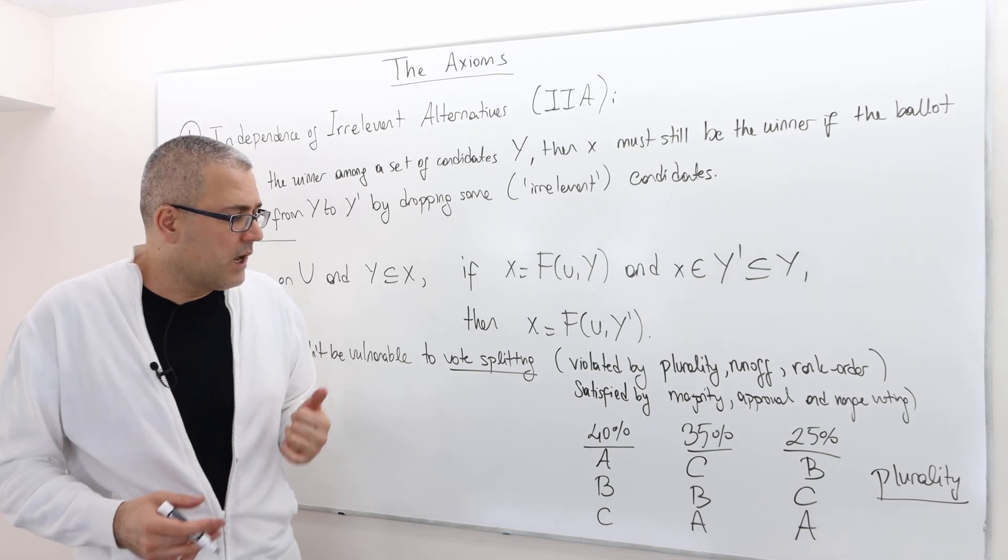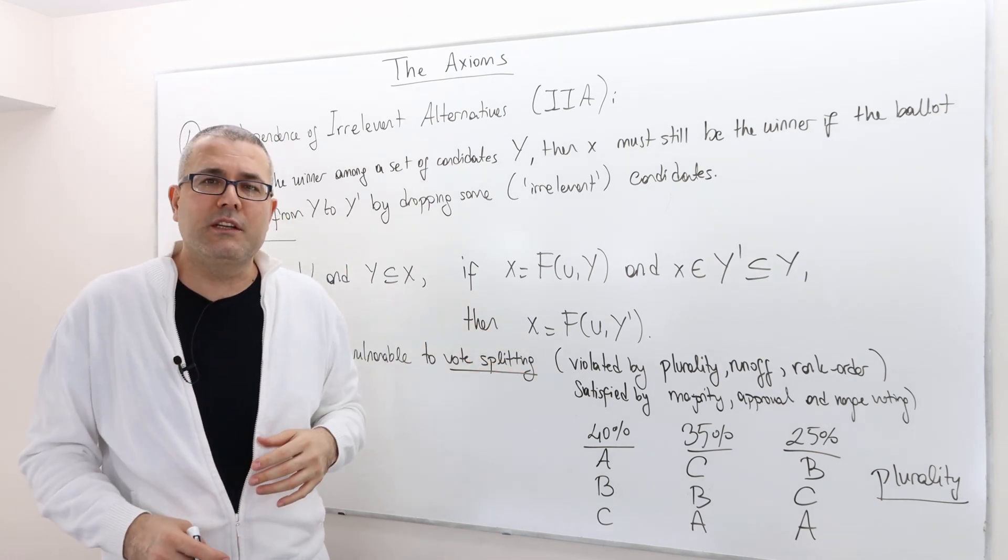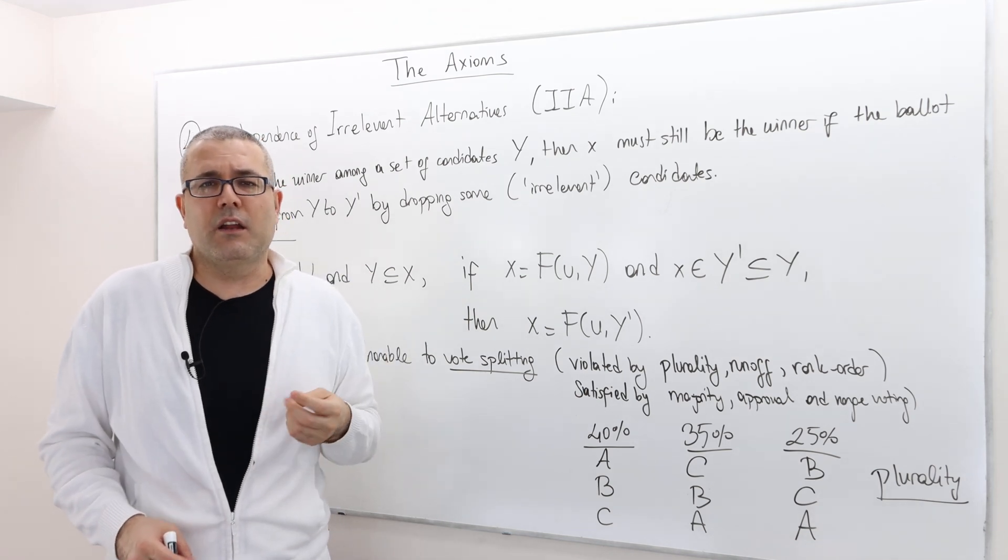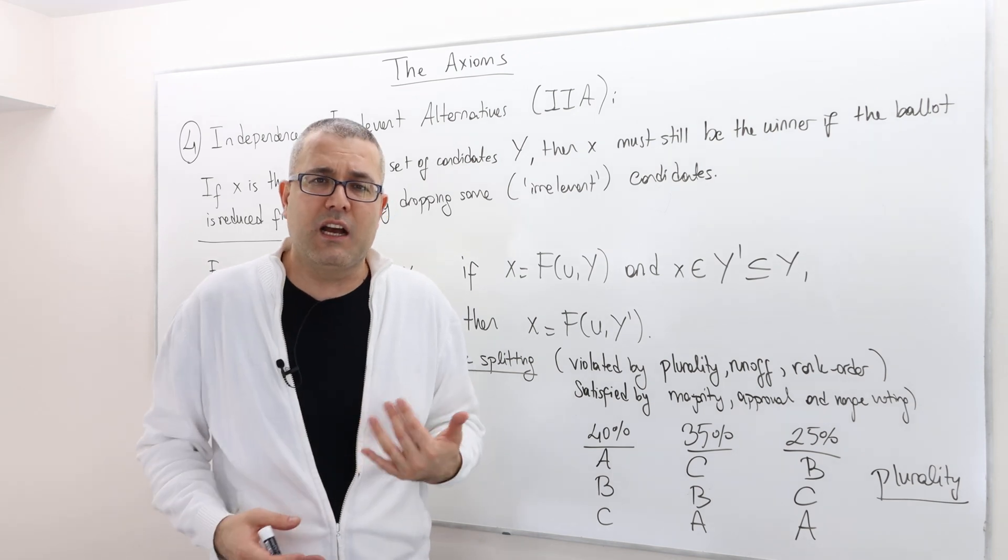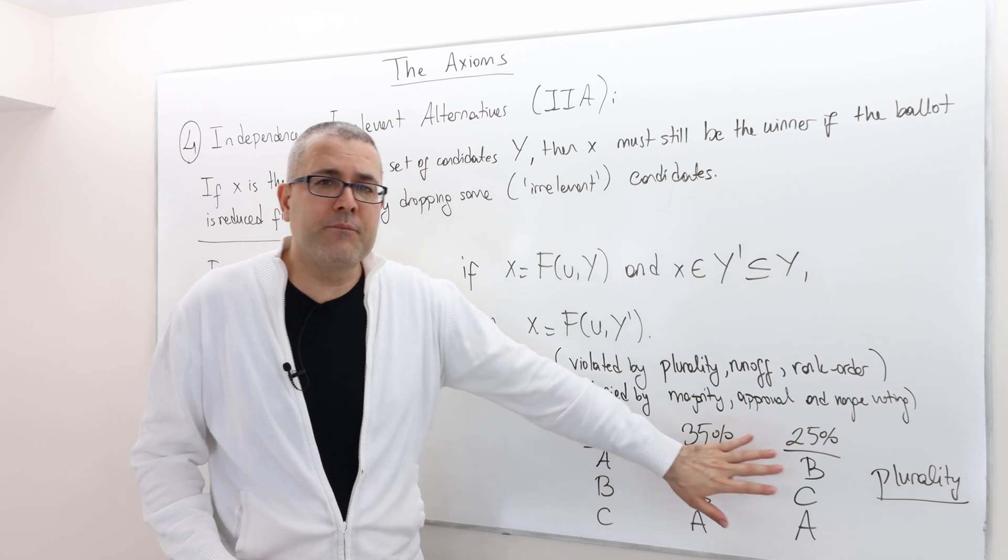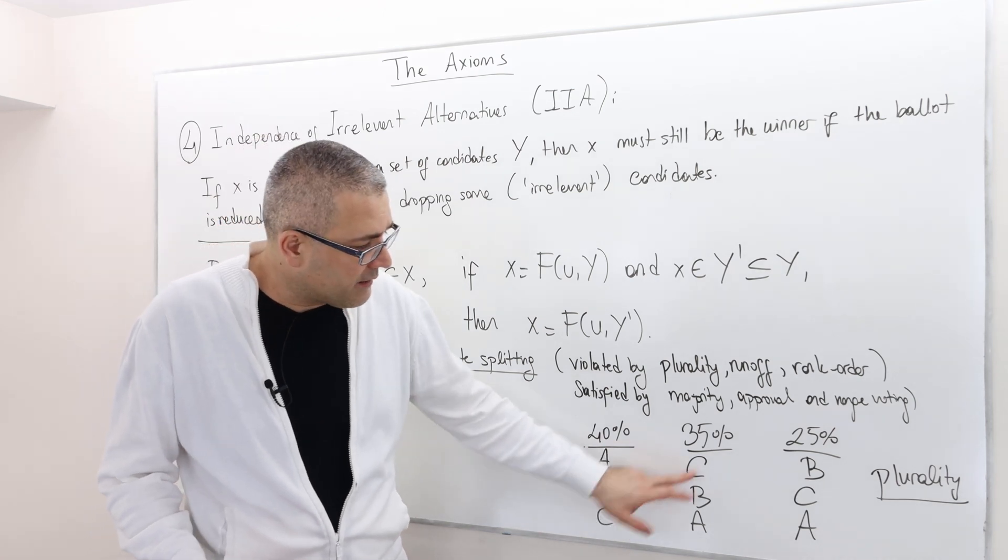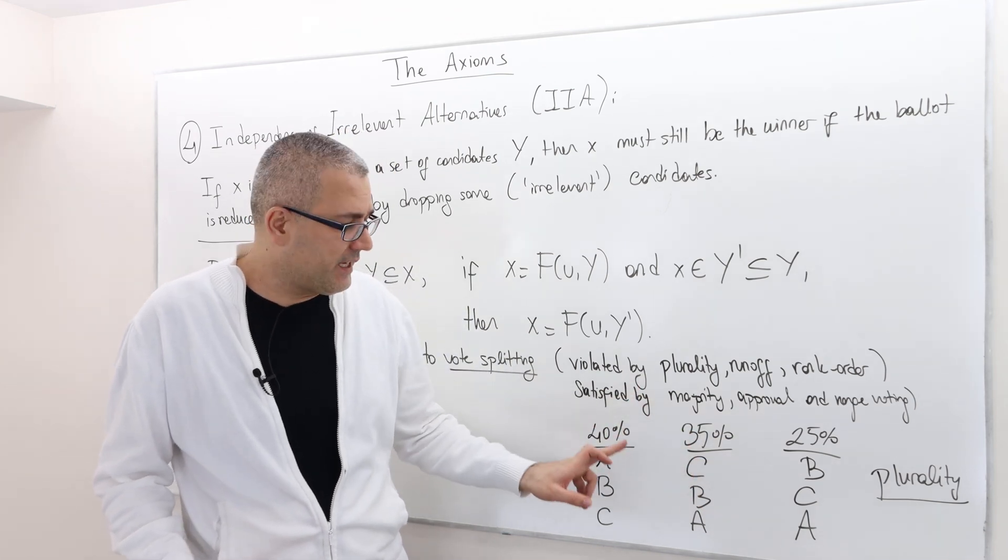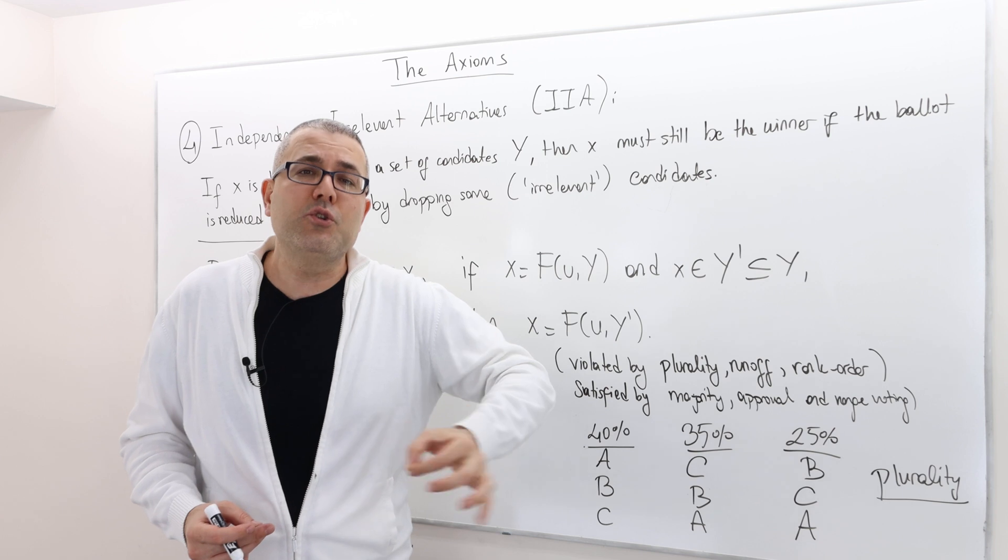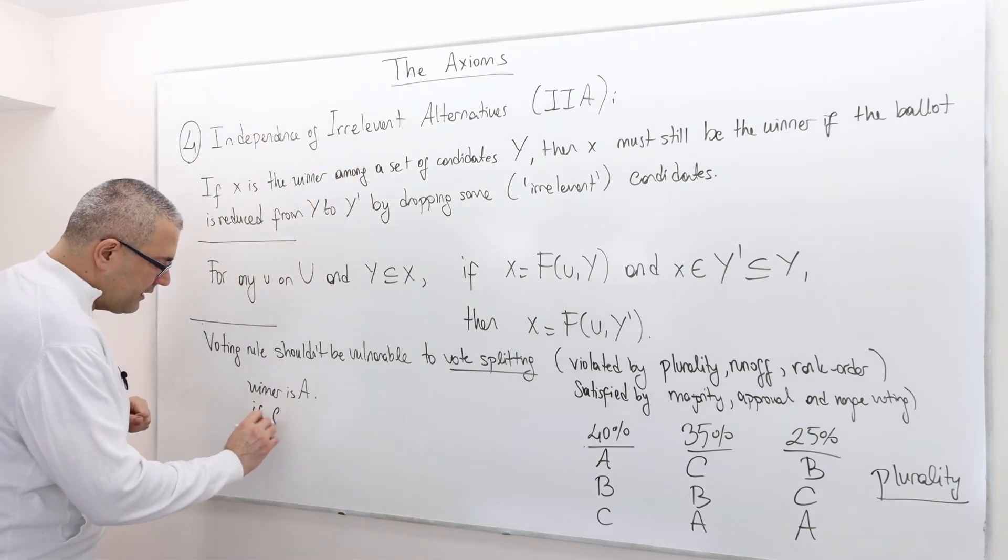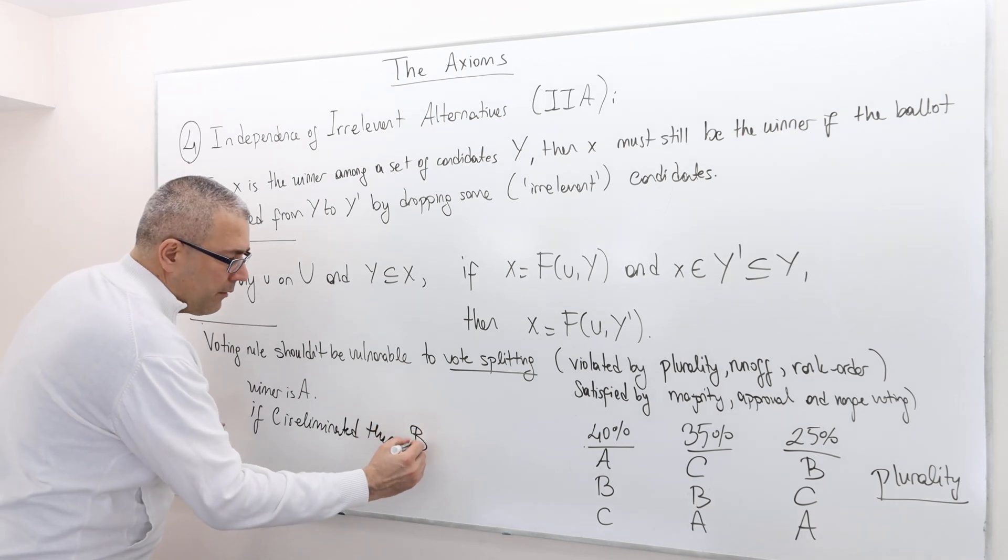So winner is A, according to plurality. Here, which candidate is losing? Both B and C. Let's say C foresees this sort of situation and decides not to enter to this competition at the first place. That would mean, remember, these are true preferences. So we don't really have to re-ask those voters how would you vote? Just ignore C. Then what would happen? Then 40% says A is better than B, but here, 35 plus 25, which means 60% says B is better than A. So if C was out of picture, out of race, then B would actually win the election against A. So if C is eliminated, then B would win.